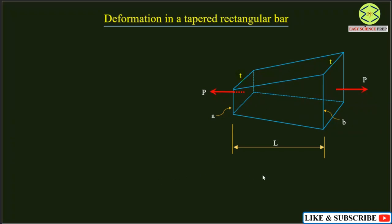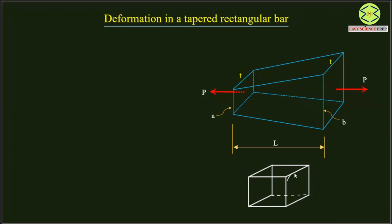We cannot use the standard expression of deformation directly. For a rectangular block with constant area, if we apply tensile load p with area A and length l, we can use the formula: deformation equals p times l divided by area of cross-section times modulus of elasticity (Young's modulus). However, this expression is valid only for a block having uniform area throughout. Since the area is increasing gradually as we move from left to right, we cannot apply this expression here.